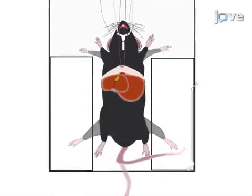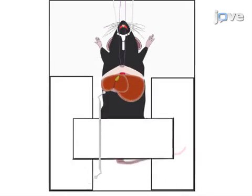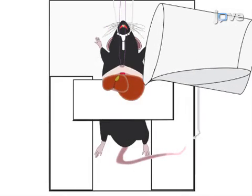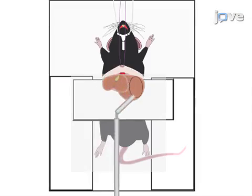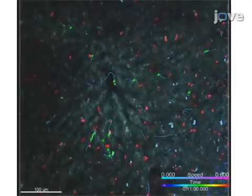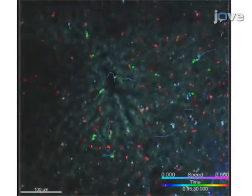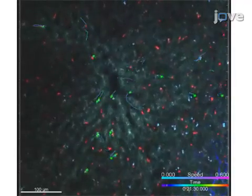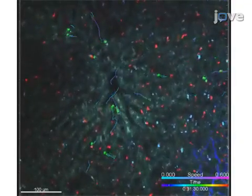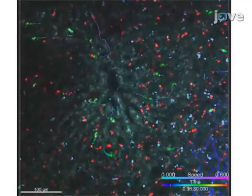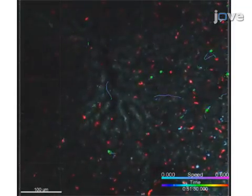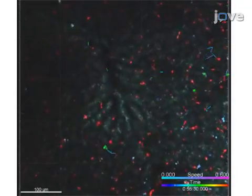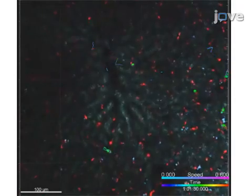Next, the liver is fixed in position by embedding it in agarose to minimize movement artifacts. Imaging can be performed over several hours, leading to high-resolution time-lapse sequences that follow the changes in recruitment, positioning and interaction of individual leukocytes in the process of developing liver inflammation.